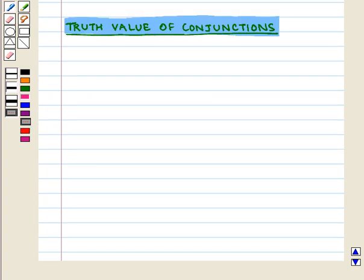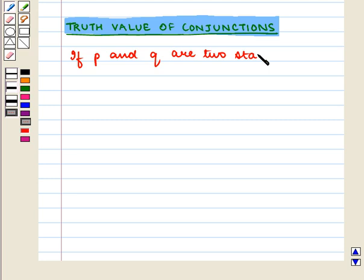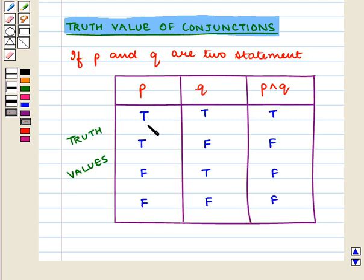Now let us see what the truth values of conjunctions are. If P and Q are two statements, then if both P and Q are true, their conjunction P ∧ Q is also true. That is, if the truth value of P is T and the truth value of Q is T, then the truth value of P ∧ Q is also T.